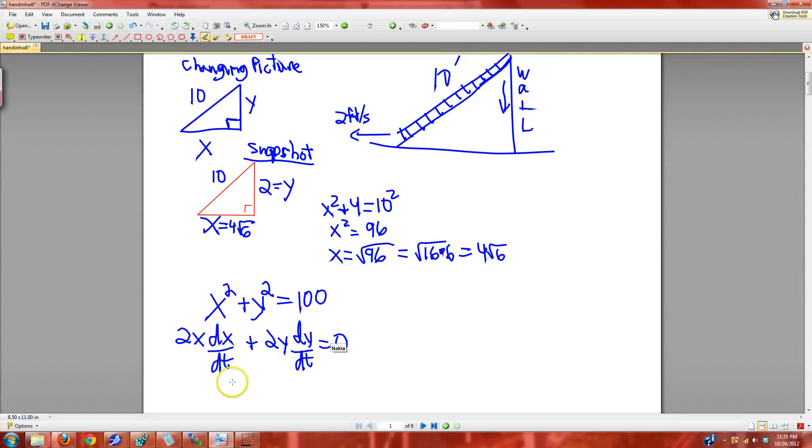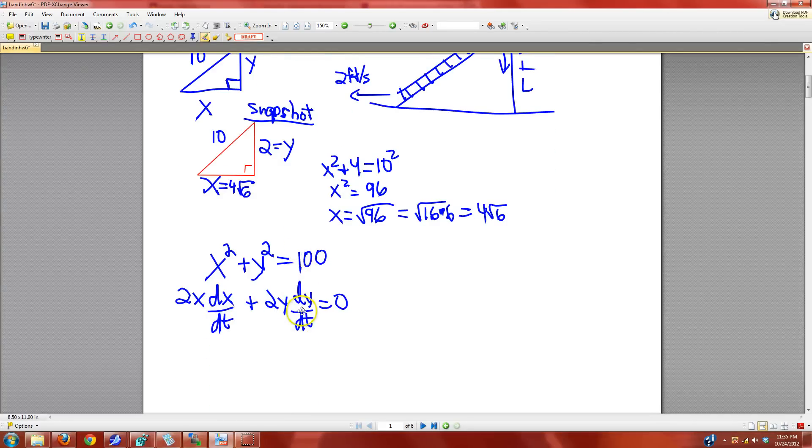Let's plug in the players. x is 4 root 6, y is 2, dx/dt is 2. We need dy/dt.